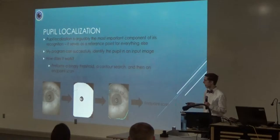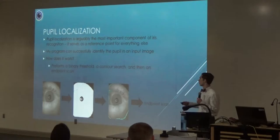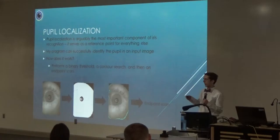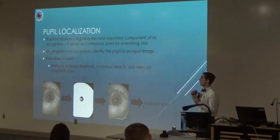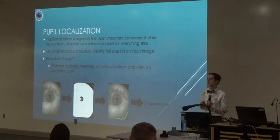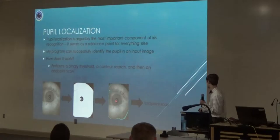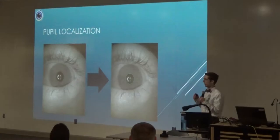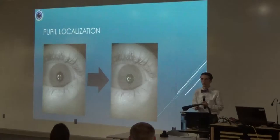Now we're going to talk about the good stuff - the iris recognition part of the project. The first part is pupil localization, arguably the most important part because it serves as a reference point. If you know where the pupil is in an image, you know the iris is simply surrounding it. It's a tiered system, so if pupil localization fails, nothing else works. So how does it work? We take an input image, and because the blacks are so black with near-infrared light, we run binary thresholding - any pixel value above a certain threshold is white, any below is black - getting a binary image that does a very good job of finding the pupil. From there, I use OpenCV's contour detection to find the pupil and pinpoint the center.